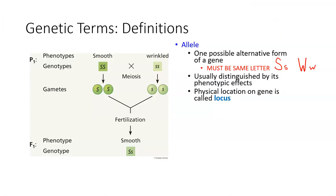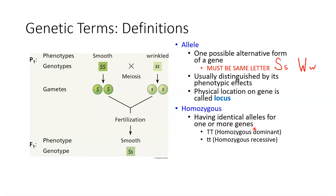Homozygous means you have two of the same alleles — either two uppercase or two lowercase letters. The stem 'homo' means same. When you see homozygous, ask yourself: is it homozygous dominant or homozygous recessive? If you just say 'homozygous,' you need to specify whether we're talking about two dominant traits or two recessive traits. It must be written as homozygous dominant or homozygous recessive.